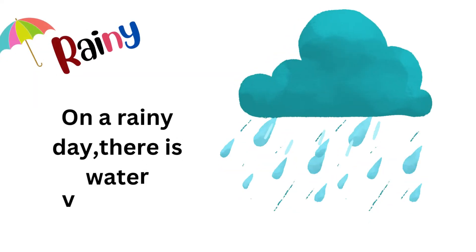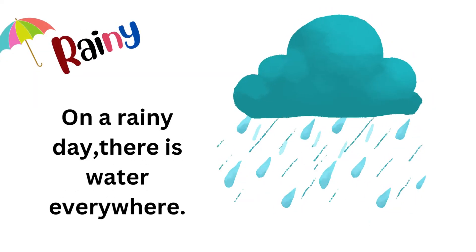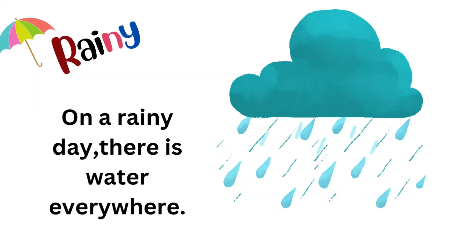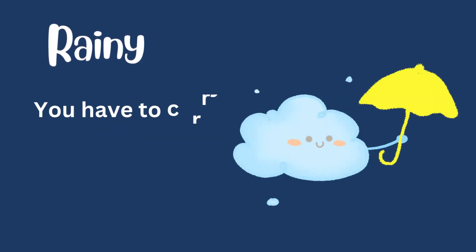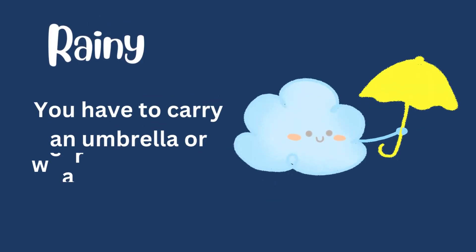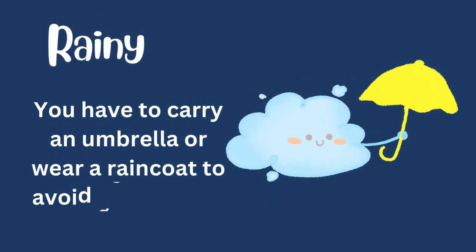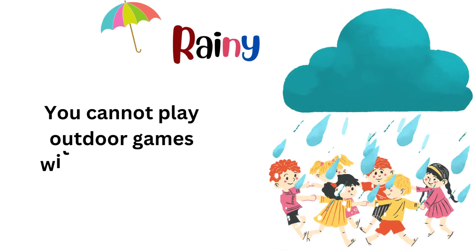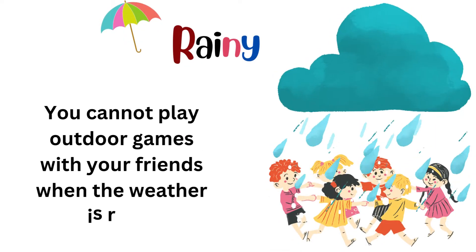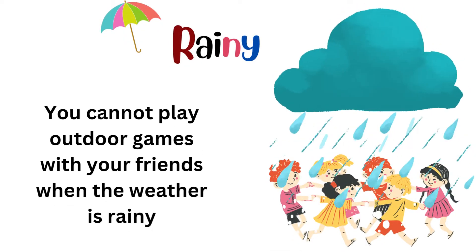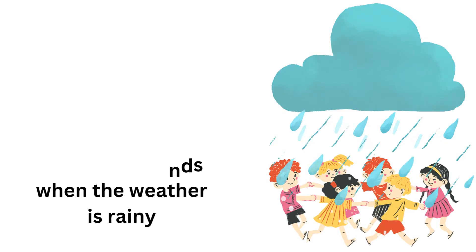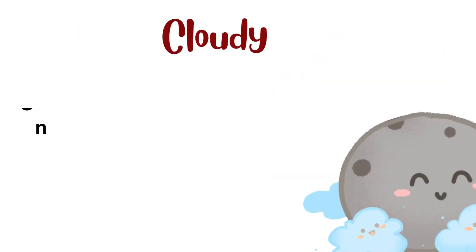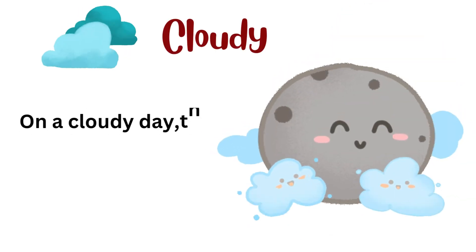What is rainy weather? On a rainy day there is water everywhere. You have to carry an umbrella or wear a raincoat to avoid getting wet. You cannot play outdoor games with your friends when the weather is rainy.